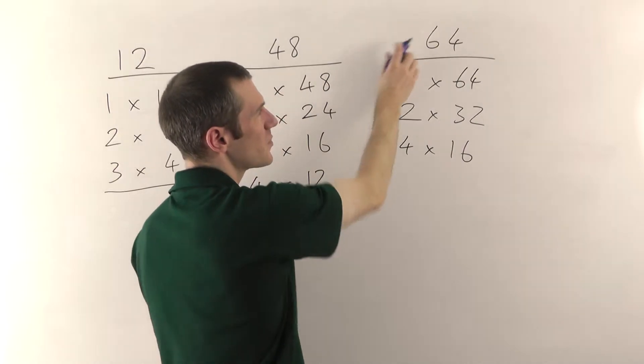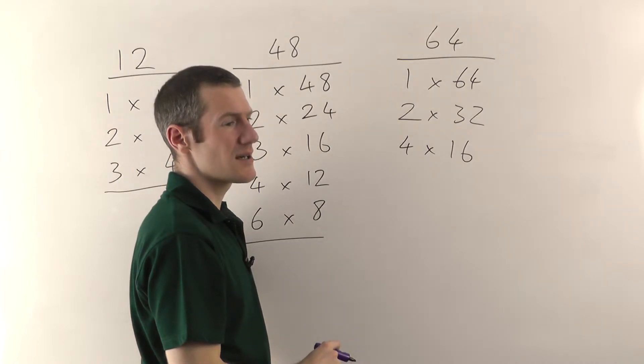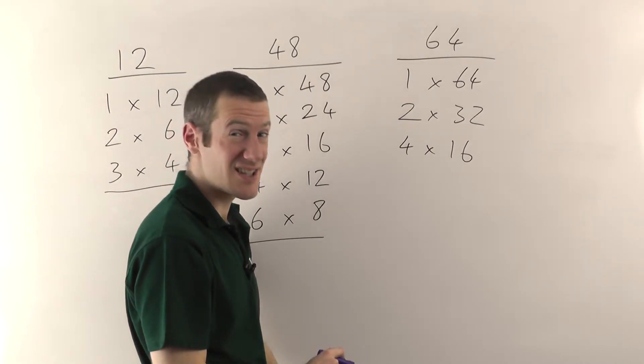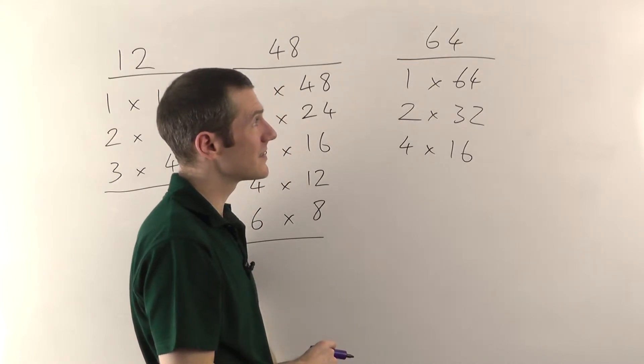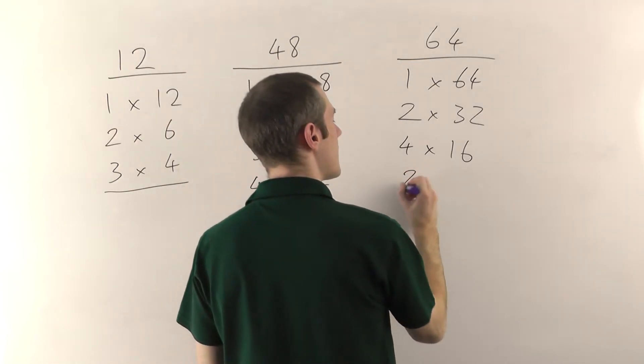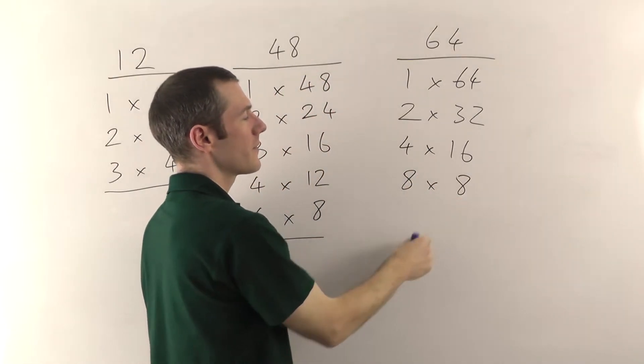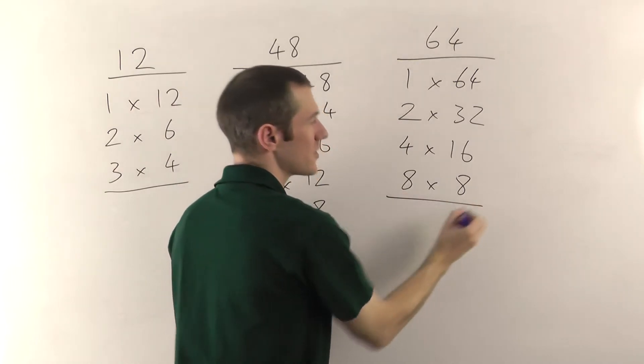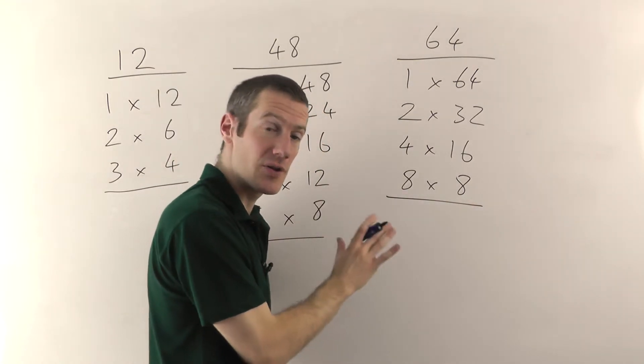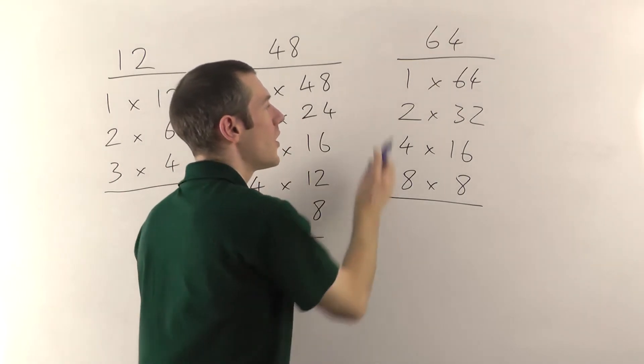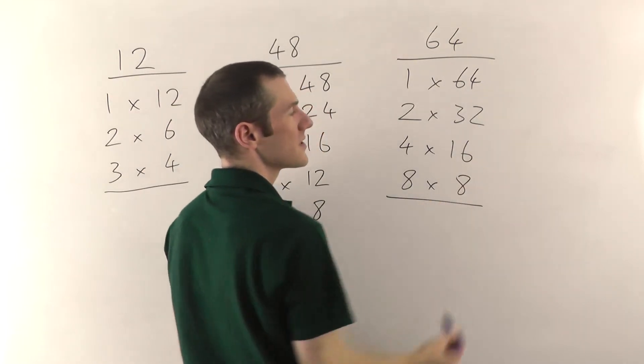8? No, 8 does go in. 8 8s are 64. And we've got something that we're trying here. So you stop. You don't need to try any others. That guarantees you've got them all. So the factors of 64 are 1, 2, 4, 8. Don't count this one twice. 16, 32 and 64.